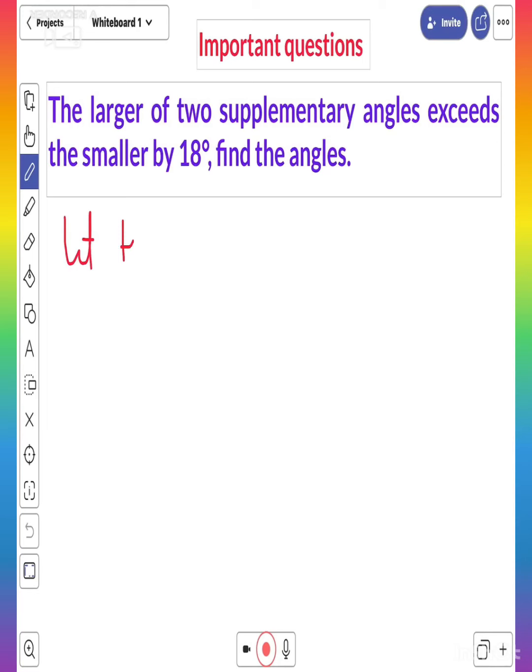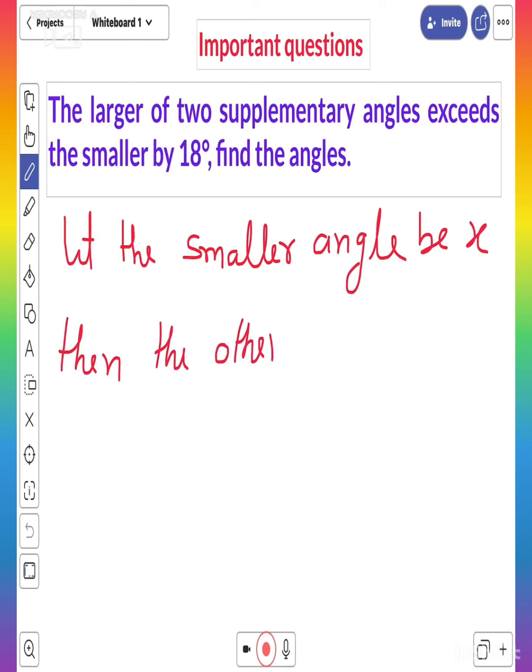Let the smaller angle be x. Then the other angle exceeds by 18 degrees. So this is x plus 18 degrees.